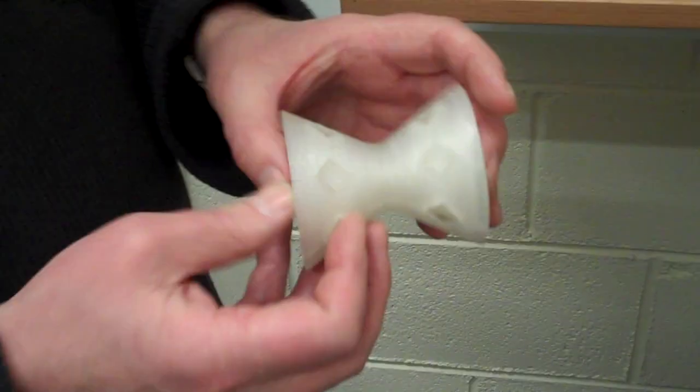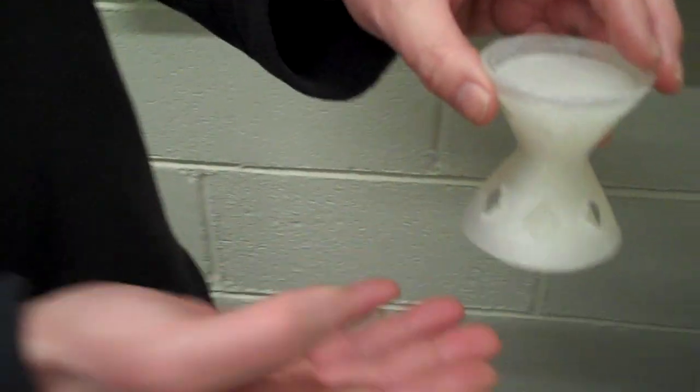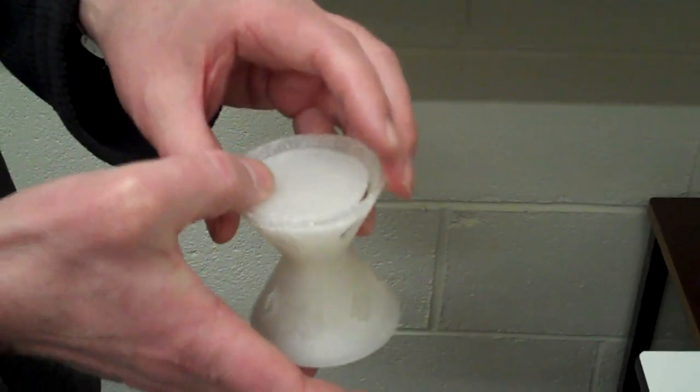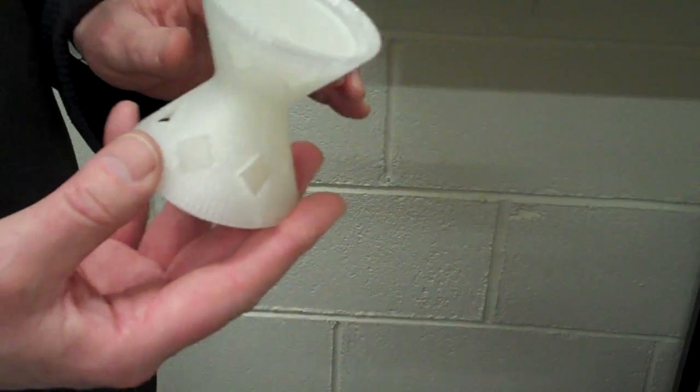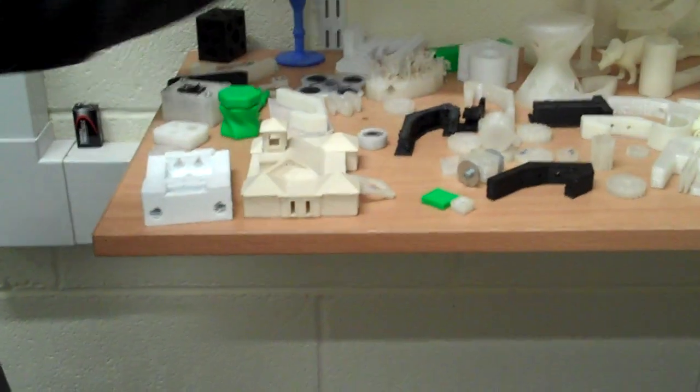What else have we got? Oh, here's an object that you can't make by any other means. This was built in layers this way, and in fact it's two things, one inside the other, such that when it was finished you can't then take it apart. Right, I get the whistle's a bit like that as well. Yeah, the whistle has got a little pea inside it.